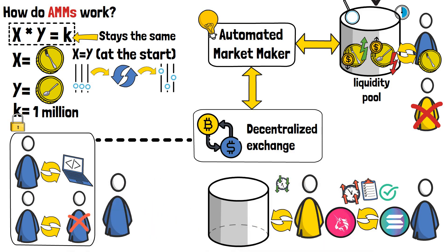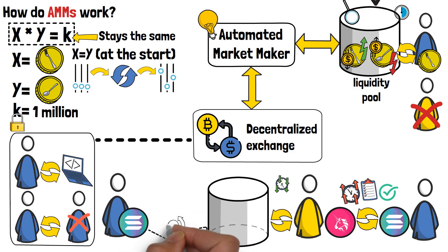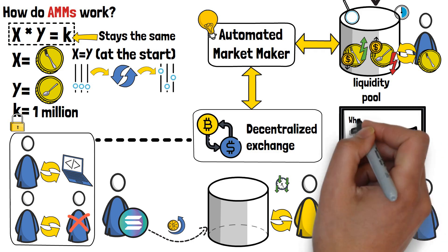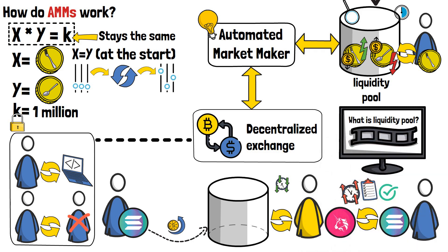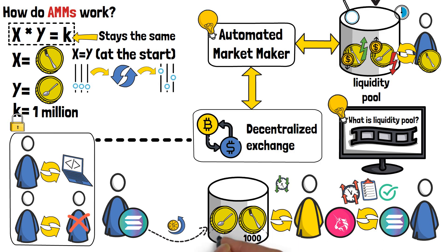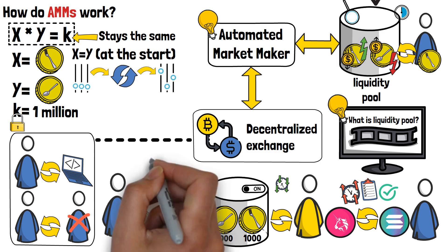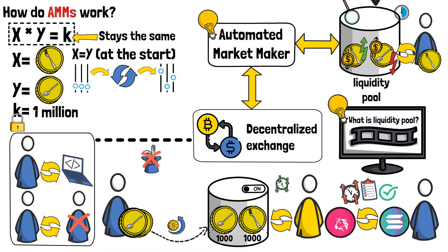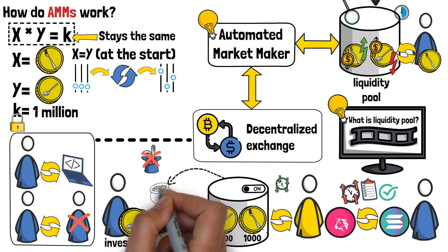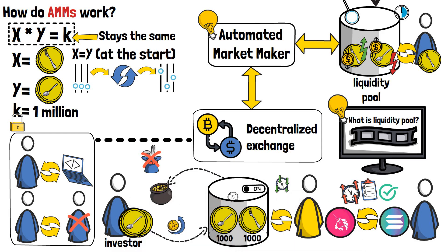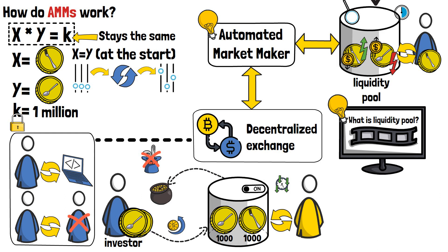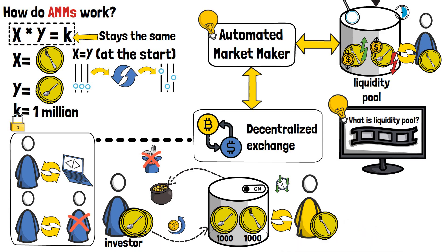Liquidity pools are also a method of how cryptocurrency enthusiasts are able to earn a passive income. Someone needs to supply the cryptocurrencies to the liquidity pools — this doesn't just happen out of thin air. The people that supply these crypto assets are called liquidity providers, or simply investors. Automated market makers work by rewarding investors with a small percentage of coins from each transaction happening in the pool. This way, with time, investors are able to make a profit, while crypto traders are able to trade the coins they want with the automated market makers.